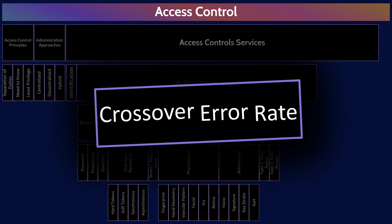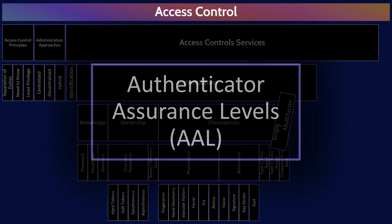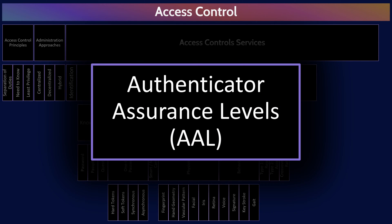We have now discussed the three factors of authentication: knowledge, ownership, and characteristic. Single factor authentication is simply using one of these factors. Multi-factor authentication means using two or more different factors of authentication. The authentication assurance levels is a model for measuring the robustness and security of an authentication process. There are three levels — AAL level 1 is the least secure, moving all the way up to AAL level 3 which is the most secure and most robust.